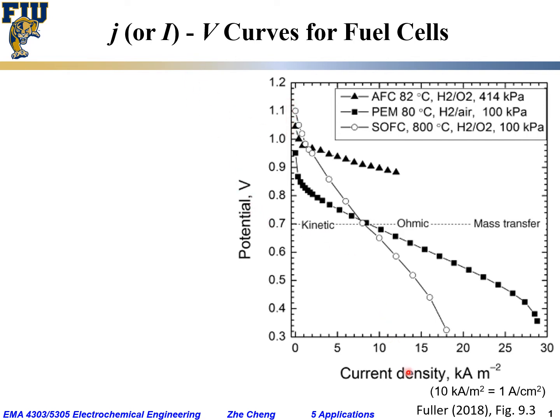The JV curve for all three types of fuel cells shows highly similar behavior. At zero current density, the cell terminal voltage is close to 1.1 volts — a little lower or a little higher — which is the open circuit voltage we have shown how to calculate before.